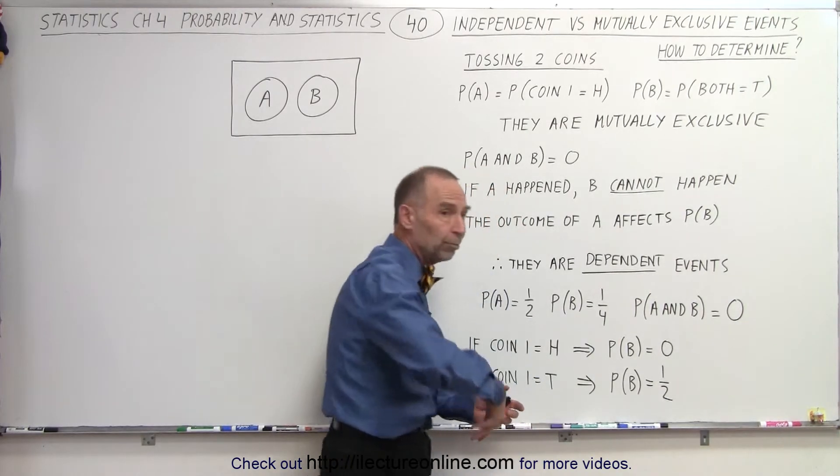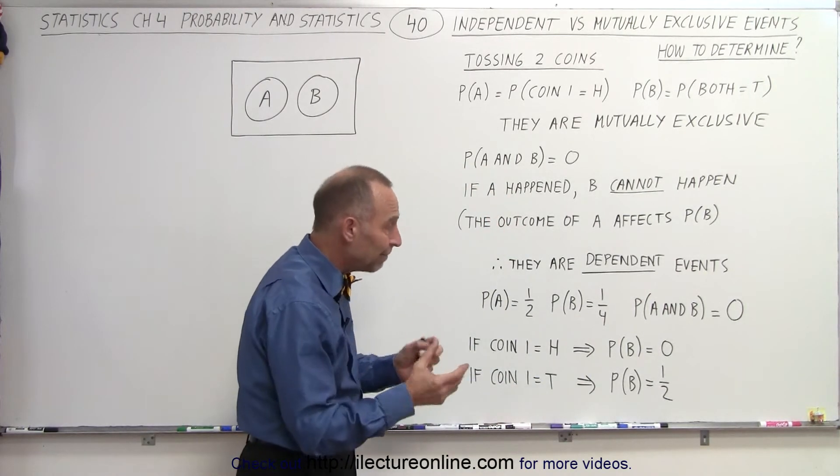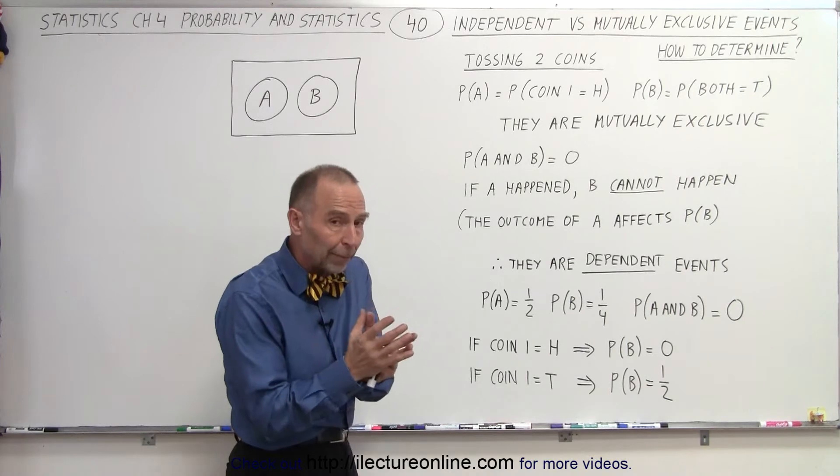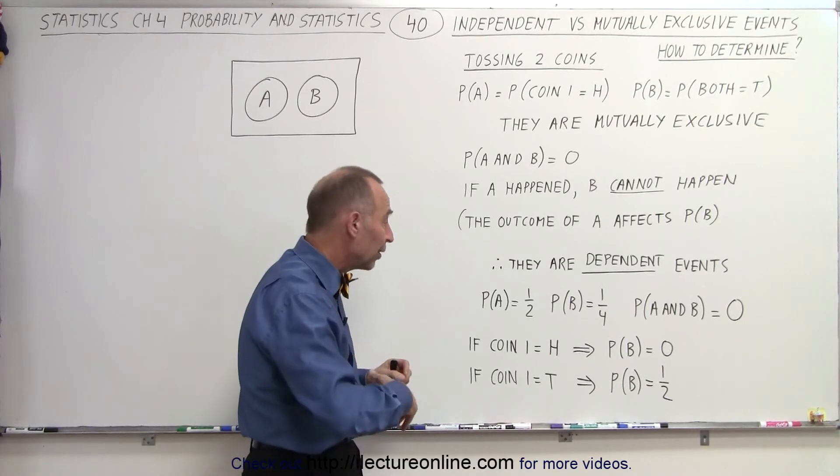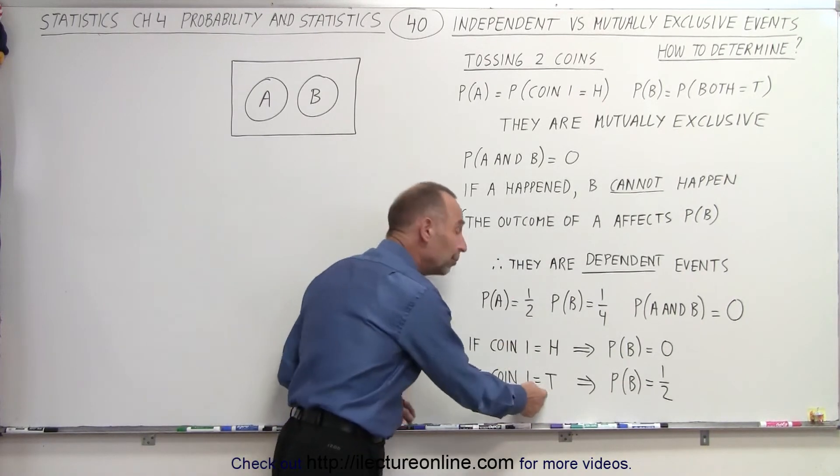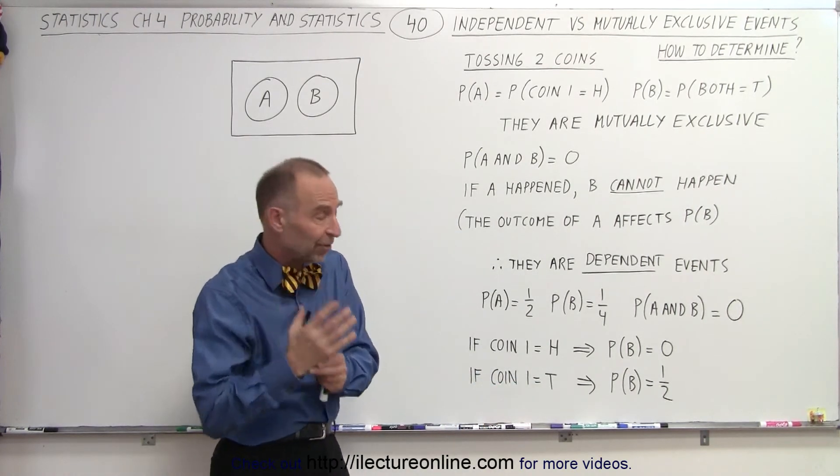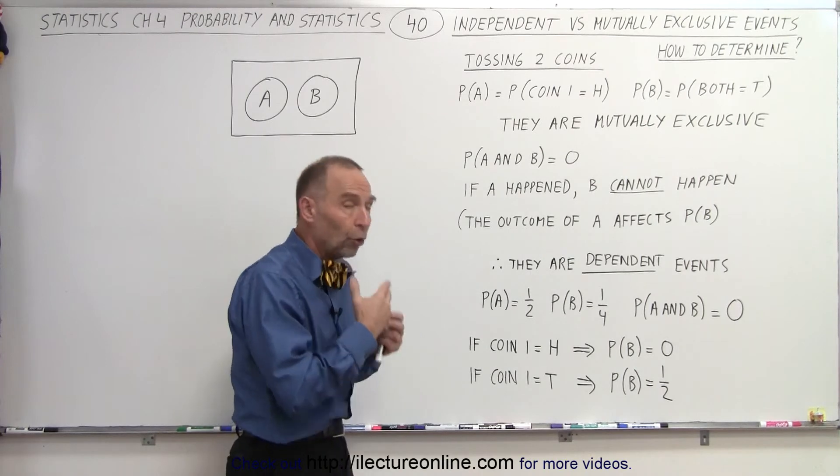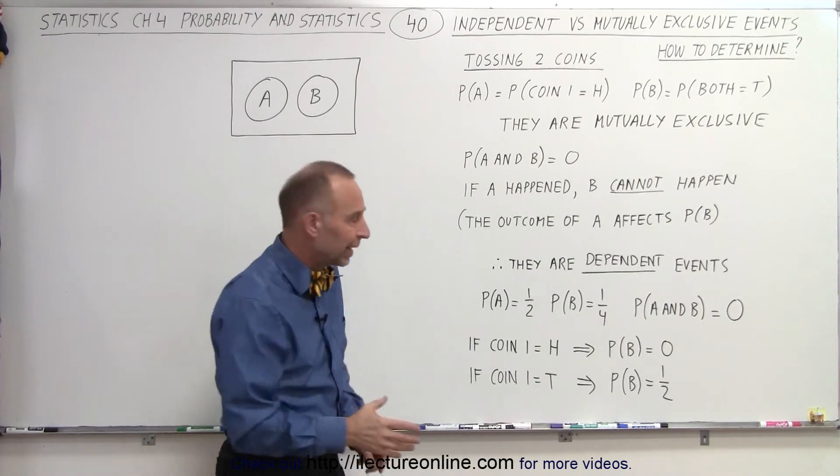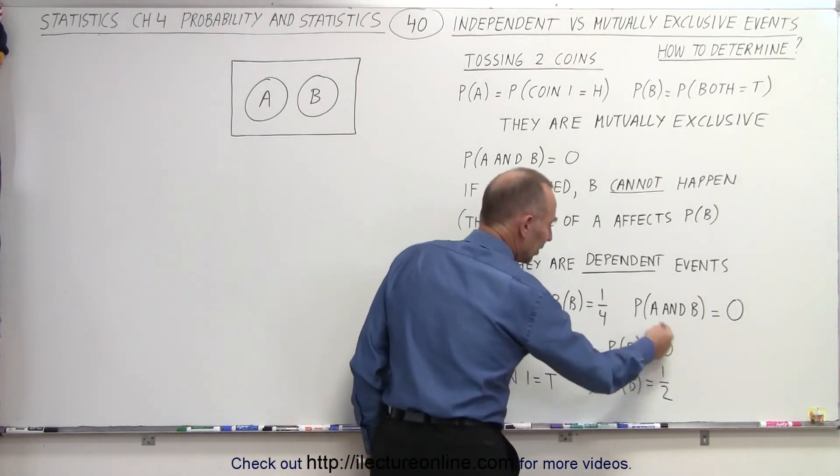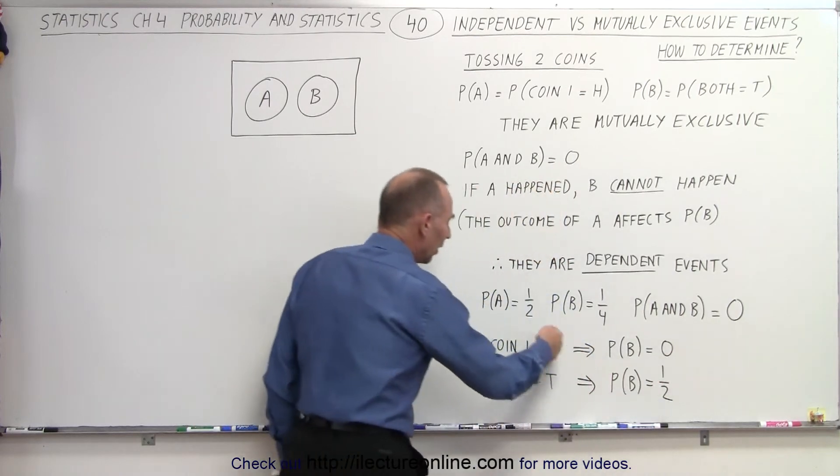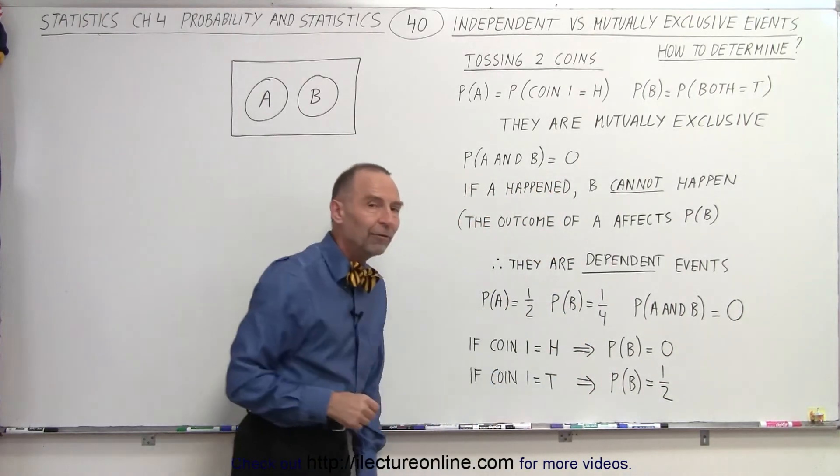So, from a probability of B equal to one-quarter, if we toss both coins at the same time, we have a one-quarter probability they both be tails, but if we toss coin one first, and coin one happens to be tails, then if we throw coin two, there's a 50% chance that coin two will also be tails, and then both of them will be tails. So, you can see that the probability of B does depend upon the outcome of A.